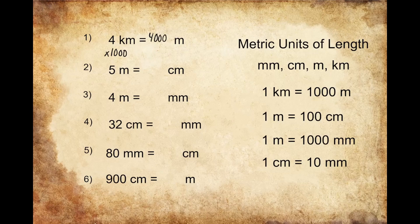Looking at question number two, we're being asked to convert five meters into centimeters. One meter is equal to 100 centimeters, so if I have five meters, that's going to give me five groups of 100 centimeters. In order to convert meters into centimeters, I'm going to multiply the value of my meters by 100. Five times 100 gives us 500, so five meters converts to 500 centimeters.